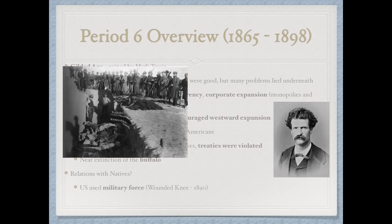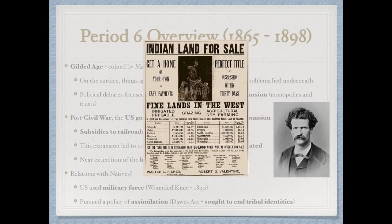The US used military force against natives — we see that with Wounded Knee in 1890, in which 300 Native Americans, mostly women and children, were massacred. The US also pursued a policy of assimilation. The Dawes Act is not specifically mentioned in the curriculum, but assimilation is. This sought to end tribal identities by dividing up Native American land and giving heads of families 160 acres, shifting their way of life from hunting to farming. Native children were sent to boarding schools where they were taught in English only.